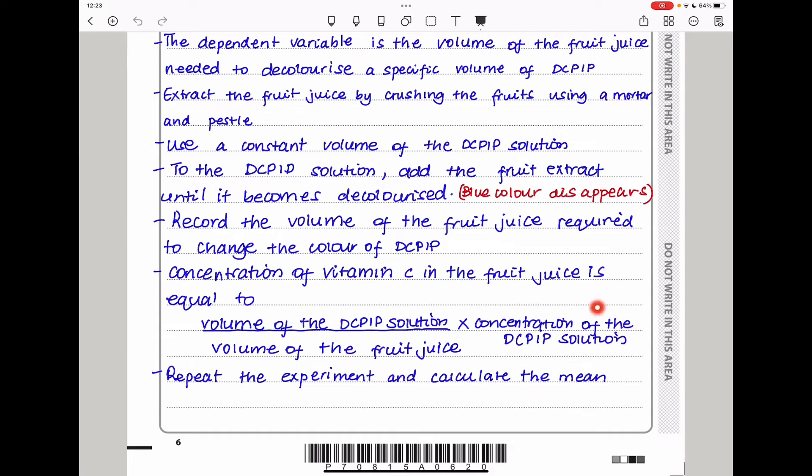The concentration of the vitamin C in the fruit juice is equal to... This is the formula for calculating the concentration. Concentration 1 times volume 1 is equal to concentration 2 times volume 2. This is where the number of moles are equal. If you're trying to find concentration 1, it's equal to concentration 2 times volume 2 divided by volume 1. We can find the second concentration using this same formula.